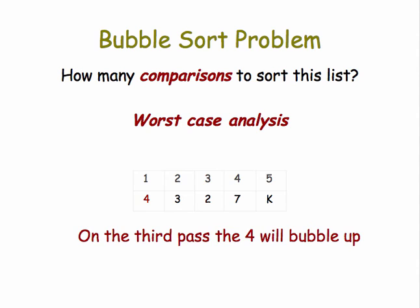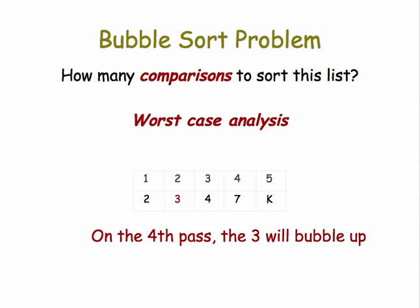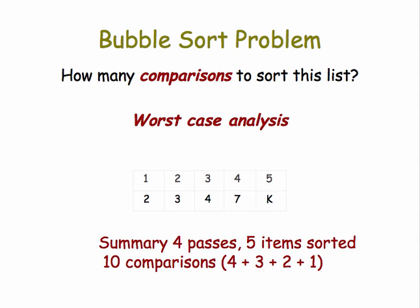Third pass, the four will bubble up, so it goes up to its proper place, so that's two more comparisons. Fourth pass, the three will bubble up. And so after four passes, you've sorted the five items and it took a total of ten comparisons.